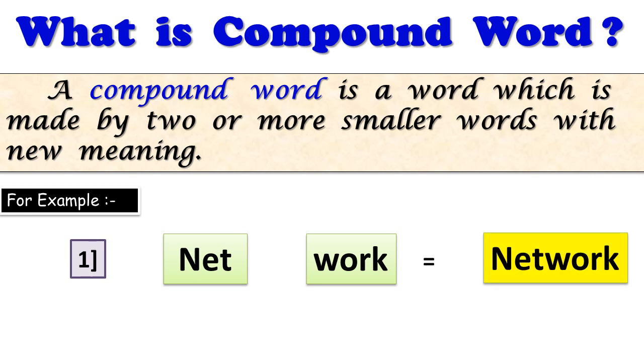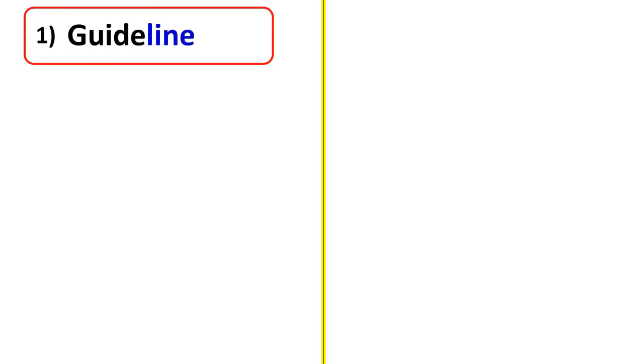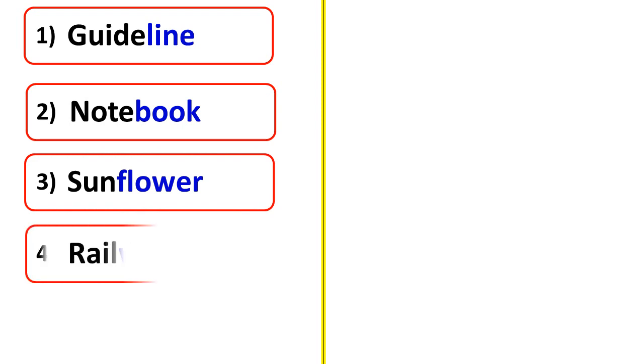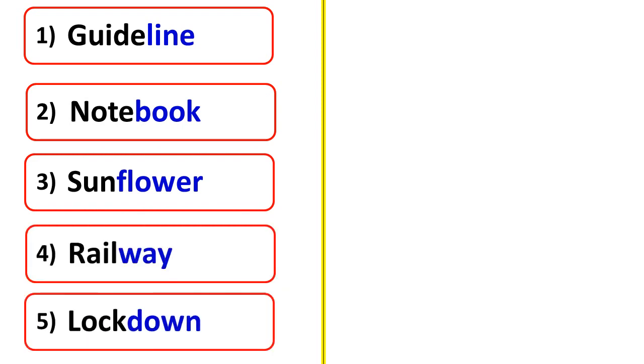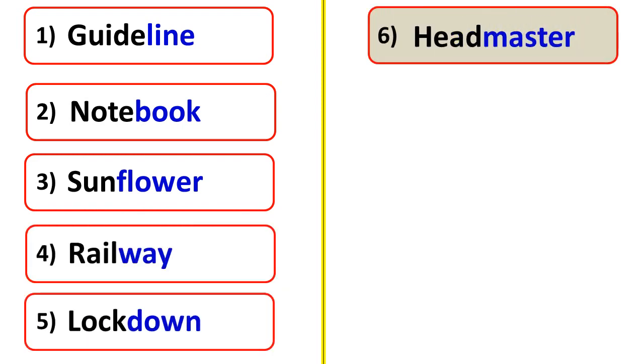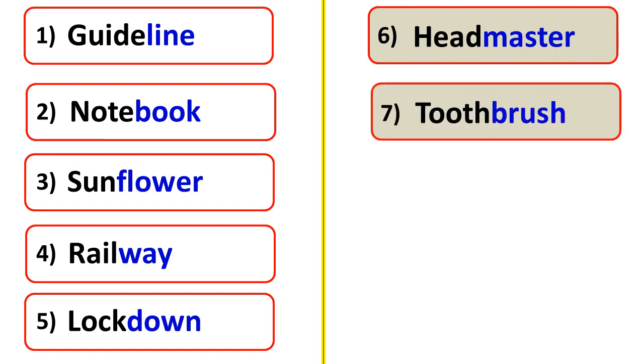Now we see step by step all compound words. Guideline, notebook, sunflower, railway, lockdown, headmaster, toothbrush, chairman.